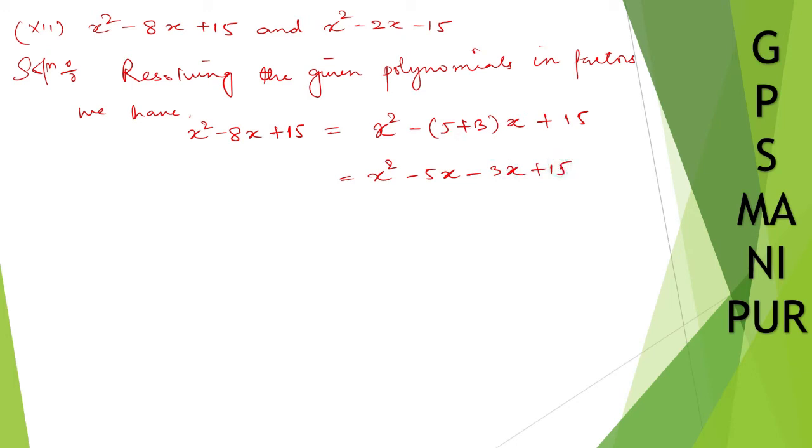You may be wondering how I got 5 plus 3. 5 × 3 is 15 and 5 + 3 is 8. You must get that number: if you multiply those two numbers you must get 15, and if you add them you must get 8. So now take x common. So x - 5 is left out. From these two you can take 3 common. So this factors as (x-5)(x-3).